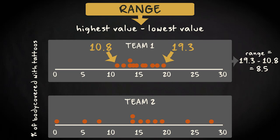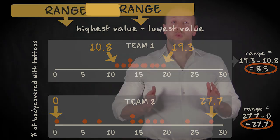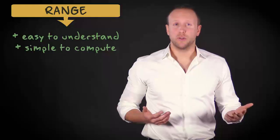In team 2, the player with the largest tattoo density has covered his body for 27.7% with tattoos, and the player with the smallest density for 0%. The range is therefore 27.7 minus 0 is 27.7. The range does show you, at a glance, that there is much more variability in team 2 than in team 1. The range is a measure of variability that is easy to understand and simple to compute.